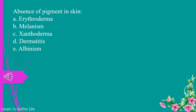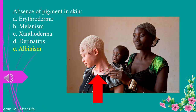Absence of pigment in skin. a. erythroderma. b. melanism. c. xanthoderma. d. dermatitis. e. albinism. The answer is e. albinism.